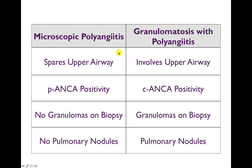The other contrast is between microscopic polyangiitis and granulomatosis with polyangiitis. Both involve pulmonary and renal symptoms and can overlap. Key differences: microscopic polyangiitis spares the upper airway, whereas granulomatosis with polyangiitis involves it. Microscopic polyangiitis is P-ANCA positive; granulomatosis with polyangiitis is C-ANCA positive. There are no granulomas on biopsy in microscopic polyangiitis, but granuloma formation is present in granulomatosis with polyangiitis. Pulmonary nodules tend not to occur in microscopic polyangiitis but do occur in granulomatosis with polyangiitis.